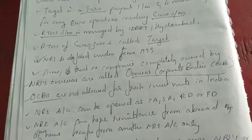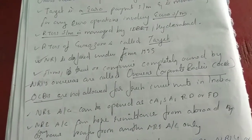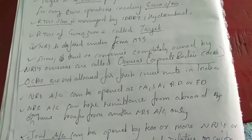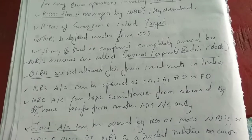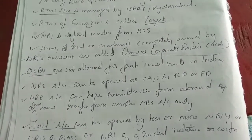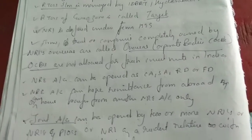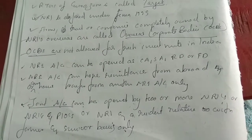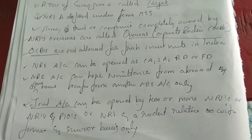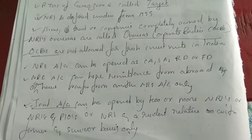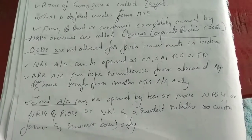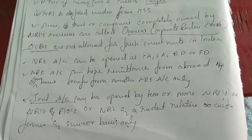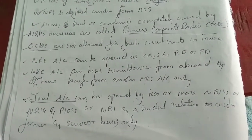NRI accounts can be opened as current accounts, savings accounts, RD, or FD. NRI accounts can have remittance from abroad and/or transfer from another NRI account only. Joint accounts can be opened by two or more NRIs, or NRIs and PIOs (Person of Indian Origin), or NRIs and a resident relative on a former or survivor basis only.